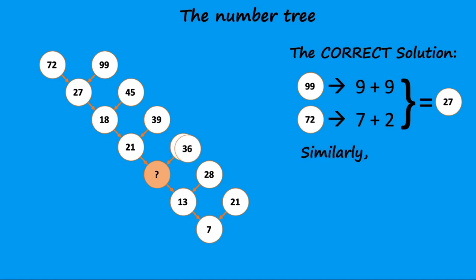Similarly, to find the missing number, we can add up 3, 6, 2 and 1, giving us the final result of 21.